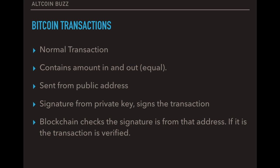So if we talk about normal Bitcoin transactions, and then we can sort of contrast that against Mimblewimble. So a normal transaction contains the amount in and the amount out. And if it's equal, they cancel out. And therefore, you've got a verified transaction. If they're not equal, then it's not verified. And that transaction cancels or highlights that there is a hacker on the network. And it's sent from a public address. And a signature from the private key signs the transaction on the public address. And the person, the receiver knows that signature, and therefore, the transaction can go ahead. So blockchain checks that the signature is from that address. If it is, the transaction is verified.